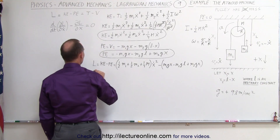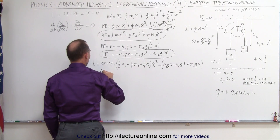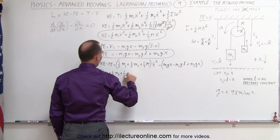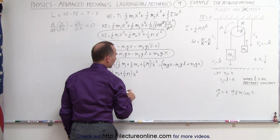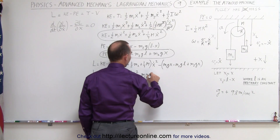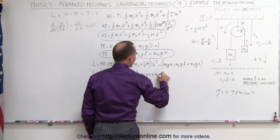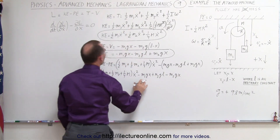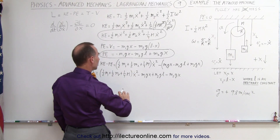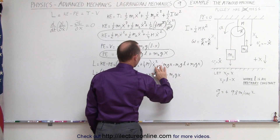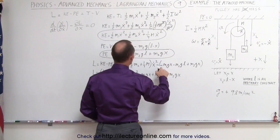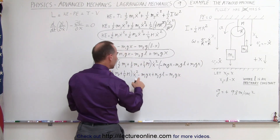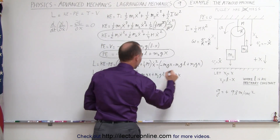The Lagrangian can be written as the quantity one-half m1 plus one-half m2 plus one-quarter times the mass of the pulley, times x-dot squared, minus m1 g x plus m2 g l minus m2 g x. Applying the negative sign carefully — minus times a minus gives a plus — so this becomes plus, plus, and minus. We have to be careful about the signs.